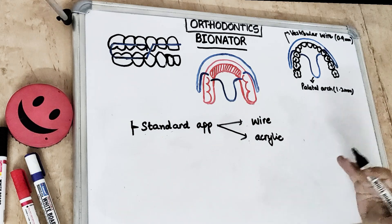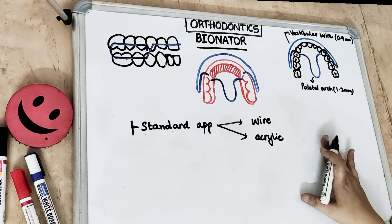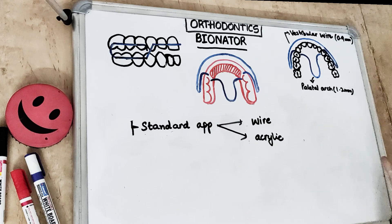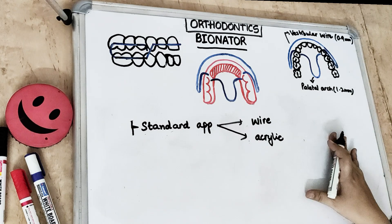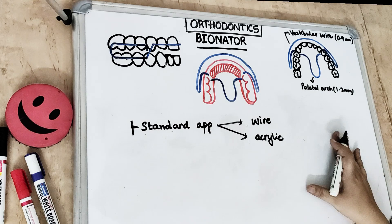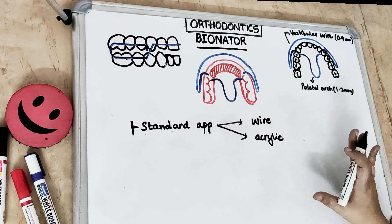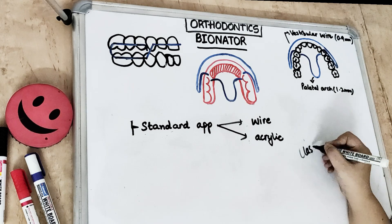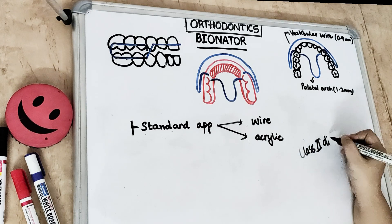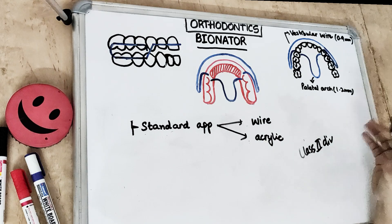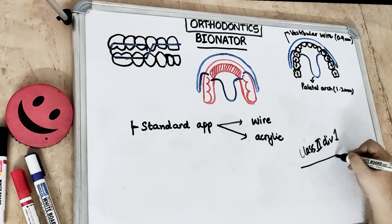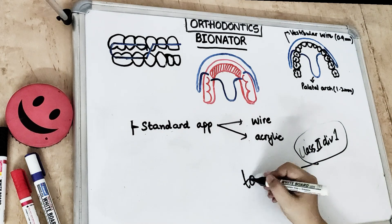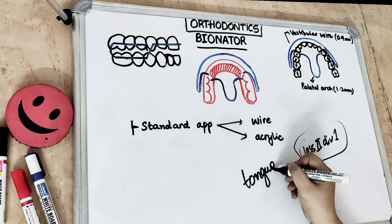The Bionator is somewhat similar to the conventional activator, but the activator was more bulky. The Bionator, given by Balters, is less bulky and more elastic. It focuses on the tongue — it corrects class 2 division 1 malocclusion in patients with narrow dental arches and corrects the backward position of the tongue. The primary action of the Bionator is on the tongue.